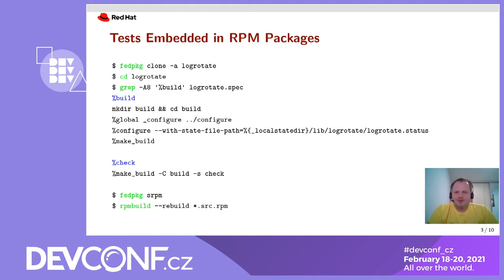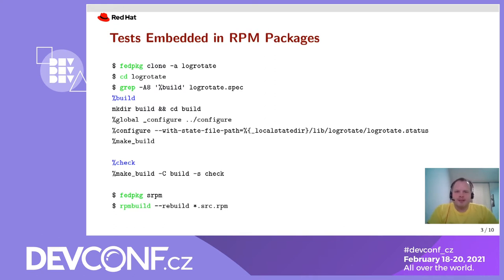Here is an example with LogRotate, which is a package that I maintain in Fedora. You can use the commands above to explore the spec file. There is a build section, which specifies how the package should be built when we create binary RPM packages. What is even more important for dynamic analyzers is the check section, which specifies how the binaries should be tested after they are built. If we run the commands below, it will automatically build the binaries and run the tests as instructed in the spec file.